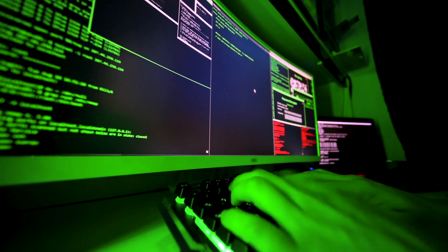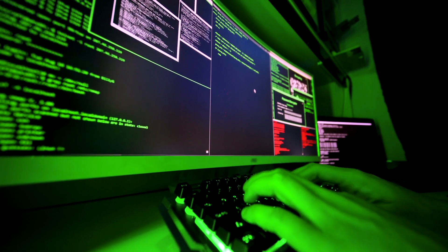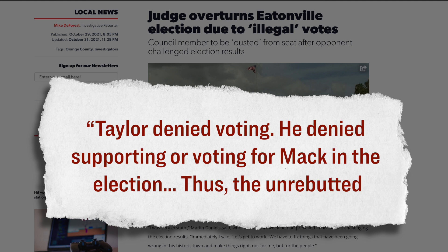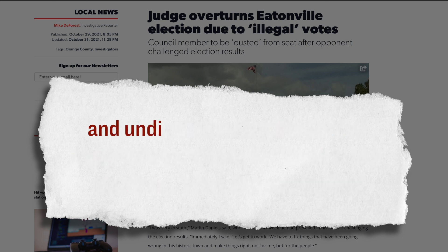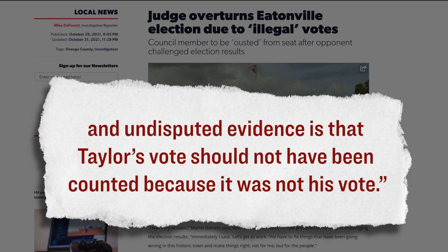And so with that witness, Mr. Sheketoff's vote became null and void. And with his vote removed, that meant that Mr. Mack and Mr. Daniels were essentially tied. However, there is more to the story. Because Mr. Daniels, he used publicly available voter registration data to identify who exactly cast those two uncounted votes which were later added to the tally during the recount process. And then he reached out to both of the voters. One of the voters, he confirmed that he did voluntarily vote for Mr. Mack. However, the other supposed voter, he was a man named Bobby Taylor, and he testified in court that he never voted in the 2020 town council election. And this led the judge to say this. Taylor denied voting. He denied supporting or voting for Mack in the election. Thus, the unrebutted and undisputed evidence is that Taylor's vote should not have been counted because it was not his vote.